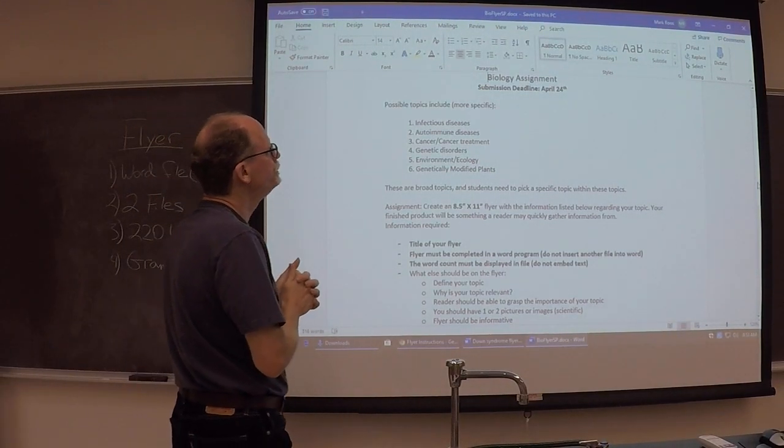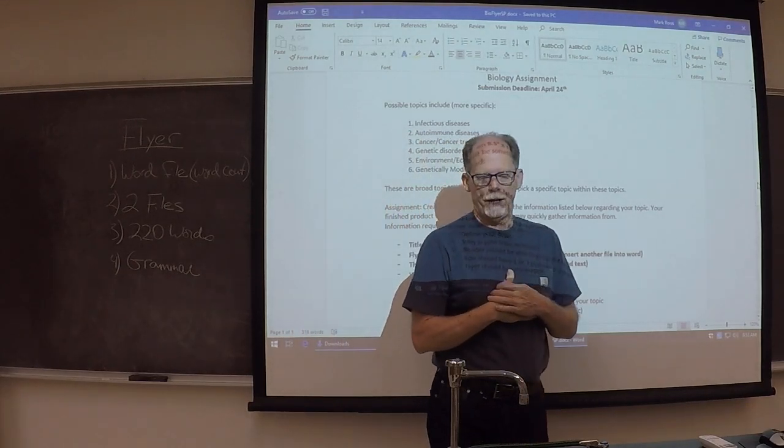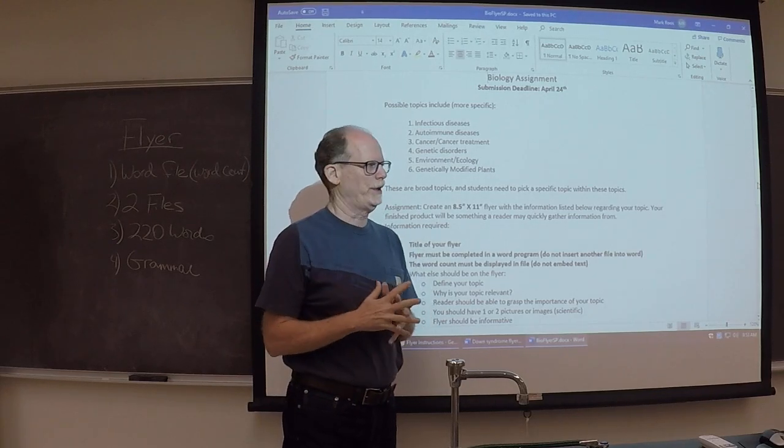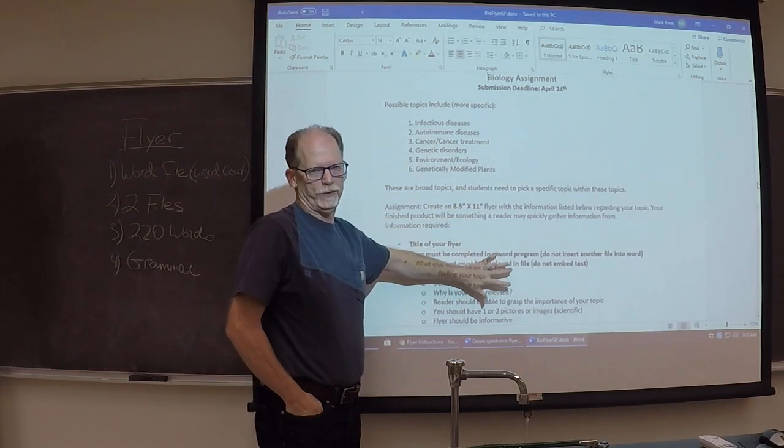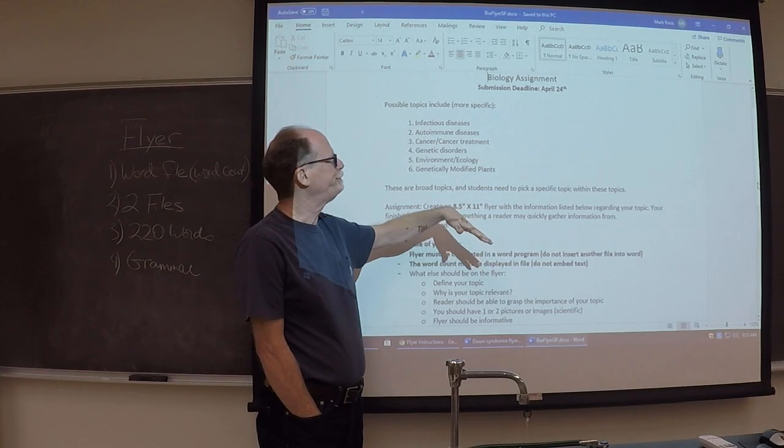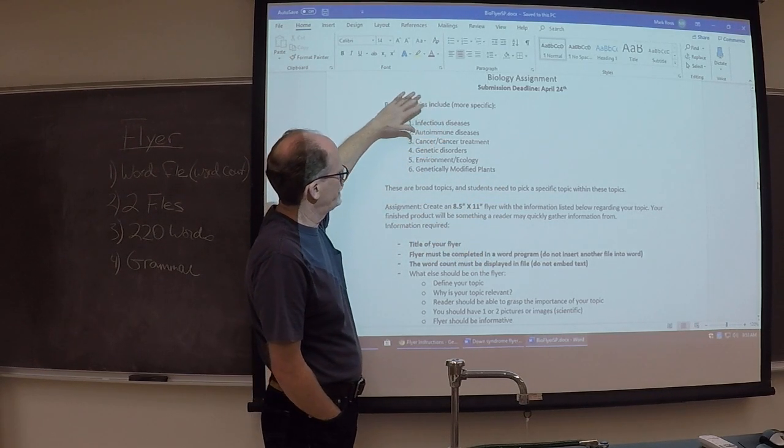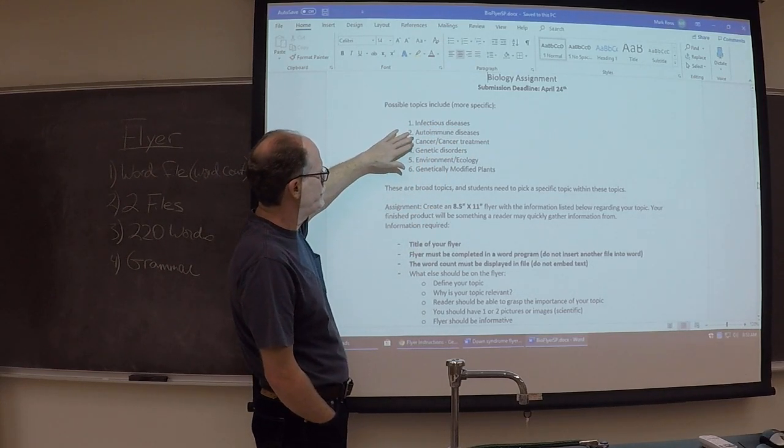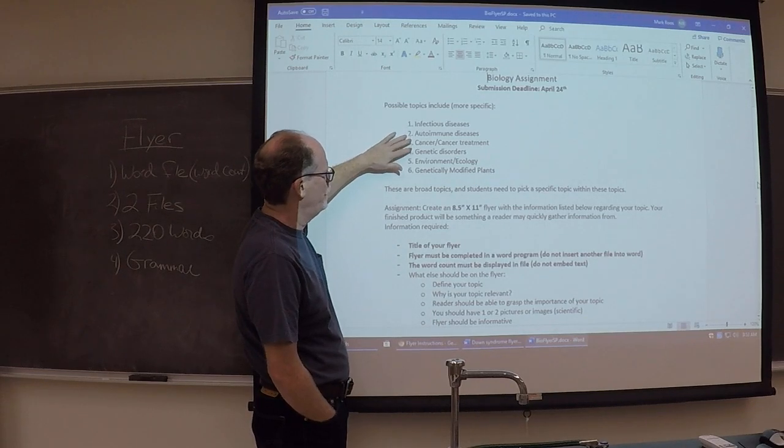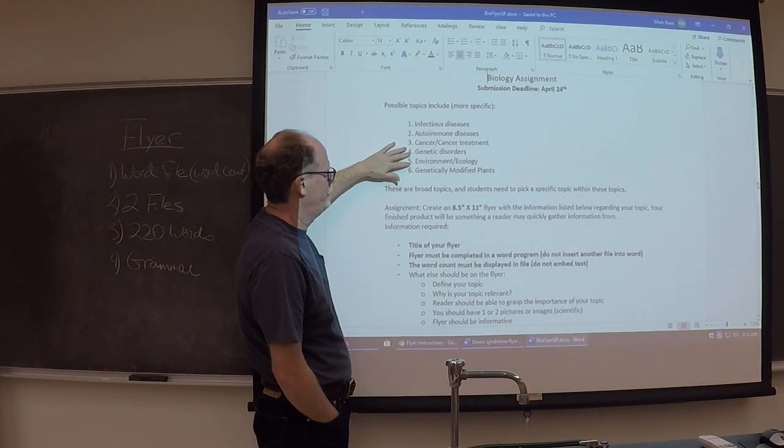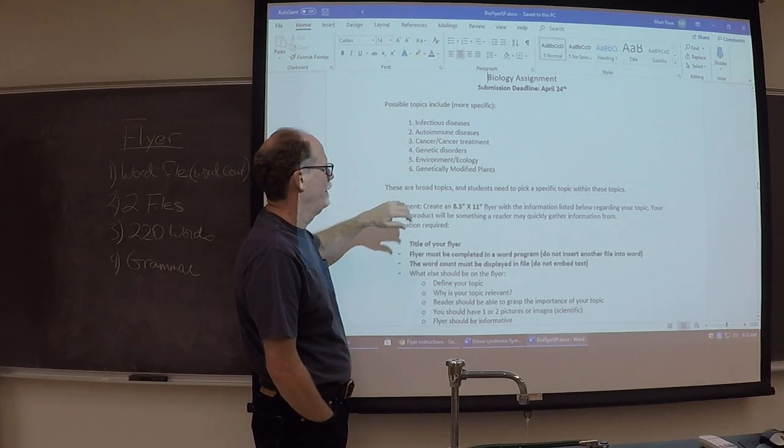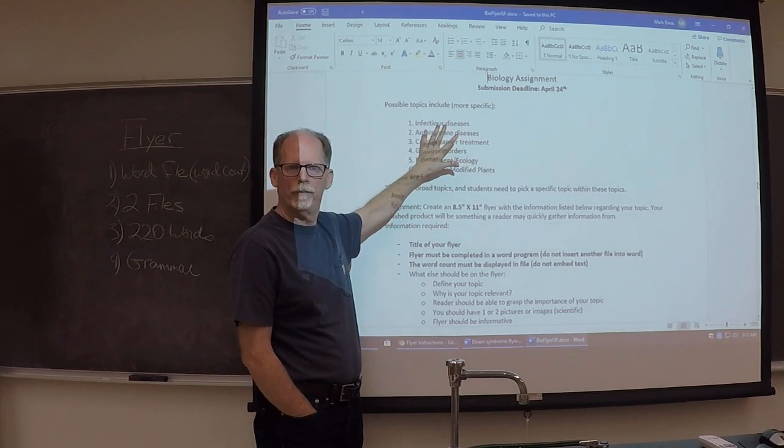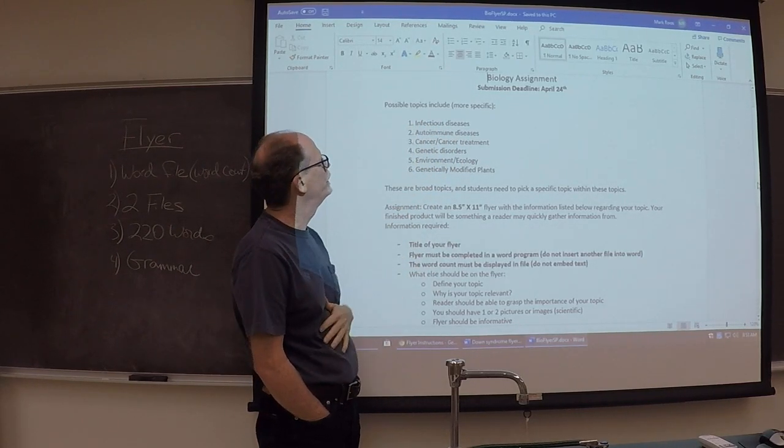Alright, so this is the flyer assignment directions. I thought I'd make this video. I normally would do this in class. The directions are found in the content section, and it lists some ideas of what you can do for your flyer. It can be an infectious disease, autoimmune disorder, cancer, cancer treatment, genetic disorders, environment, ecology, but you would pick something a bit more specific for each. These are general categories.